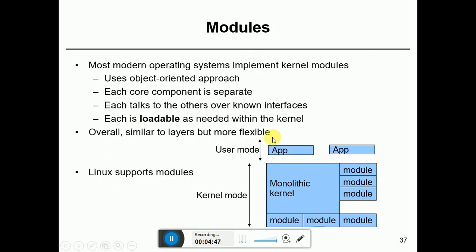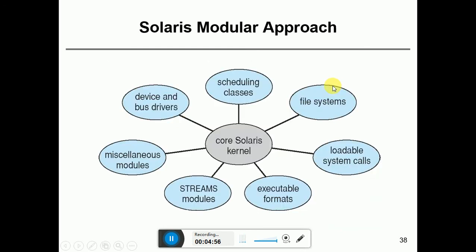The next one is the modules approach. The modules divide the operating system into different parts. It was a modern approach and a better approach. Basically, the object-oriented approach is used. The modules are divided into different objects. It is similar to the layered structure. However, it is easier to communicate between modules. In layers, upper layers can communicate with lower layers but not otherwise.